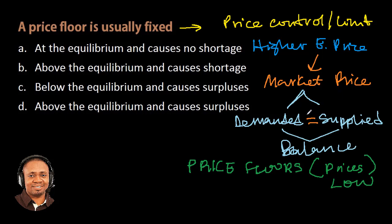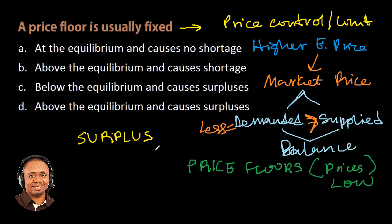This creates a problem in the sense that there is going to be less quantity demanded than the quantity supplied. And when this happens, we have what is called surplus. If the surplus is allowed to remain in the market for a very long time, it's usually going to drop below the equilibrium price.